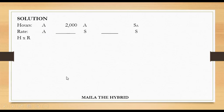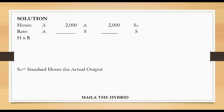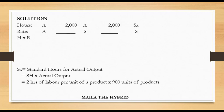Actual hours — we are given from the question that 2,000 hours were worked. To obtain SA (standard hours for actual output), you simply take standard hours times actual output. Standard hours is 2 hours of labor per unit, multiplied by actual output of 900 units, giving us 1,800 hours. So just plug that in.